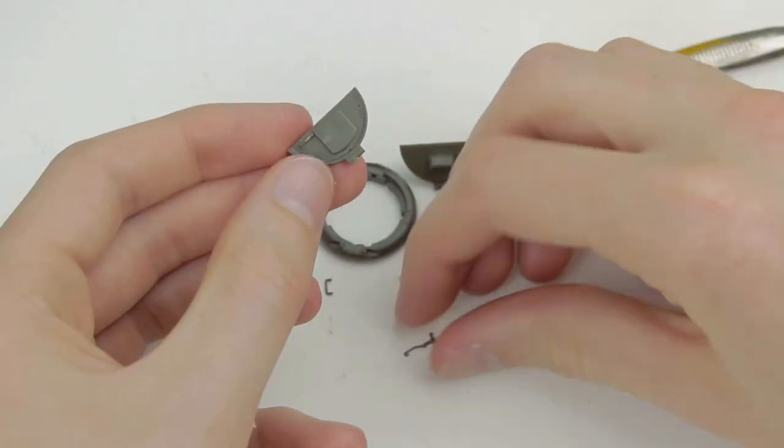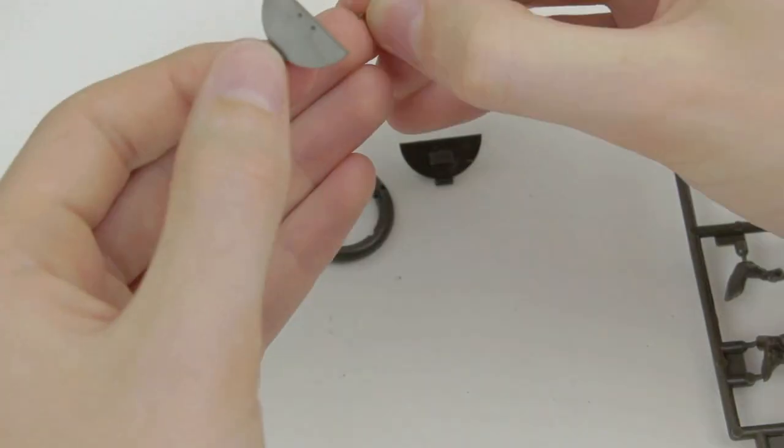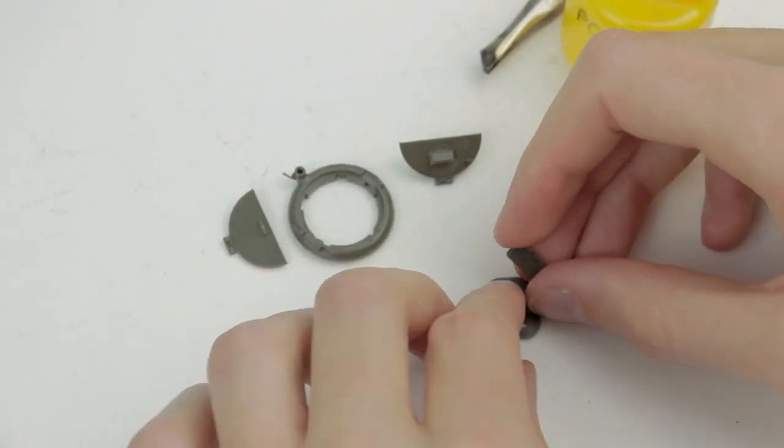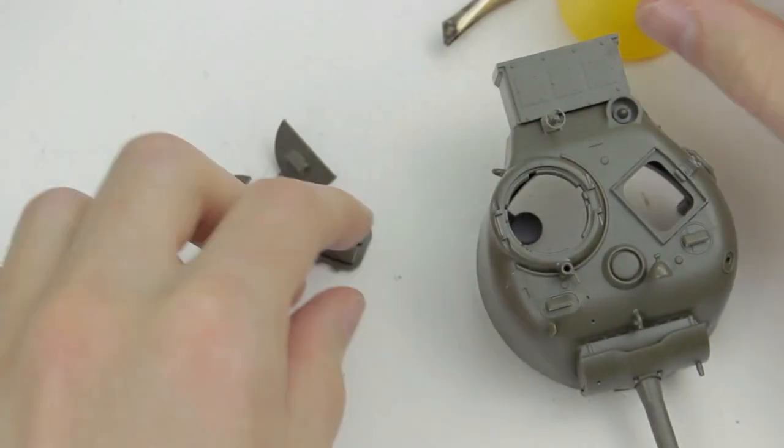The commander's hatch can be built in an open position and there is some nice detail on the inside to show off. The same goes for the loader's hatch, however I accidentally snapped the thin support rod that holds it open so I had to glue it shut.